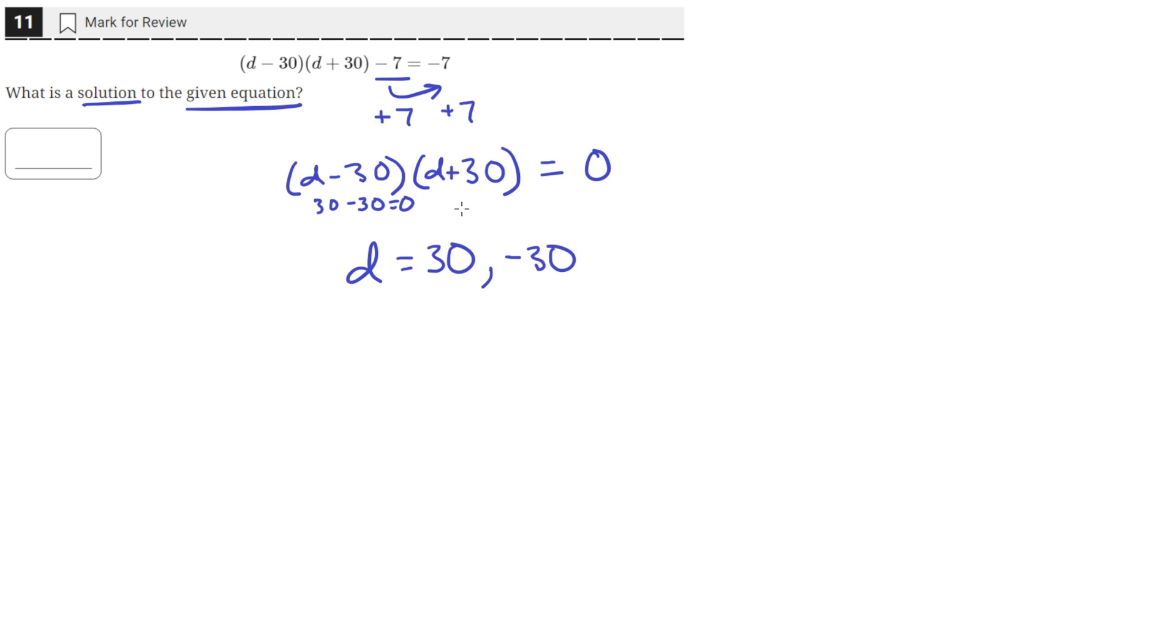Likewise, a value of negative 30 also satisfies both sides of the equation, because when d is negative 30 here, negative 30 plus 30 is just 0 again. So d can have two values.